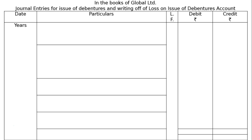In the books of Global Limited, the answer includes journal entries for issue of debentures and writing off the loss on issue of debentures account. We will have 5 columns: date, particulars, ledger folio, debit and credit with Rs symbols. There is no exact year given, so we can write 'year' in the date column.